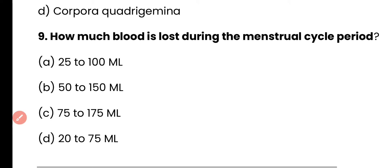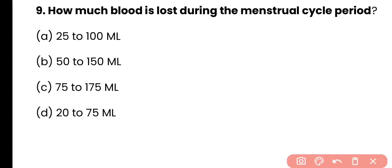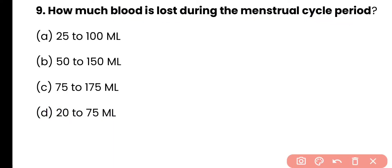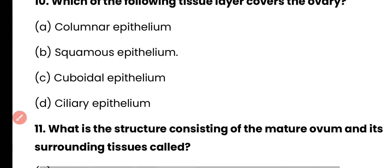Question 9: How much blood is lost during the menstrual cycle period? Options: 25–100 ml, 50–150 ml, 75–175 ml, or 20–75 ml. Correct answer is option D: 20–75 ml of blood is lost during the menstrual cycle period.